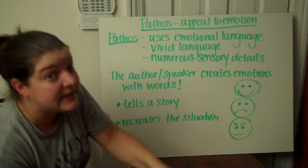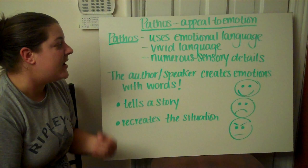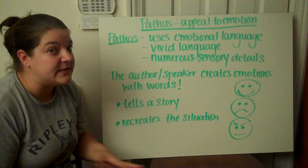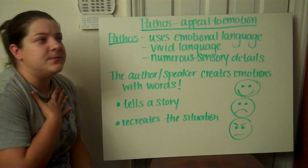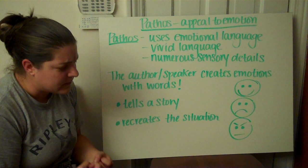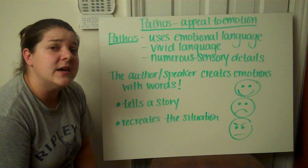Last, but definitely not least, is Pathos, which is the appeal to emotion. Pathos uses emotional language, vivid language, and numerous sensory details — looking at those five senses. The author or speaker creates emotions using words. We've all experienced a speech that brought us to feel hope, anger, happiness, or real sadness. Oftentimes, they use a story to help with that and recreate the situation. Here are our little emoticons to remind us this is all about the emotions.